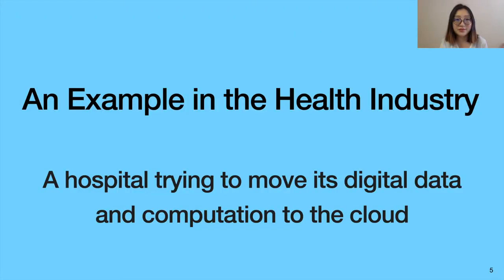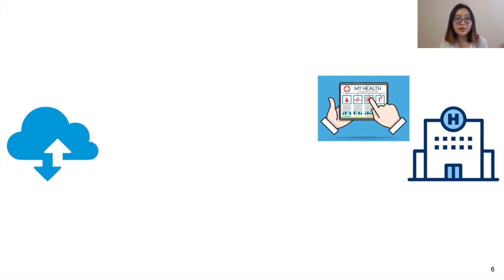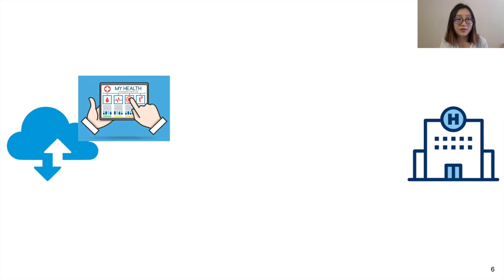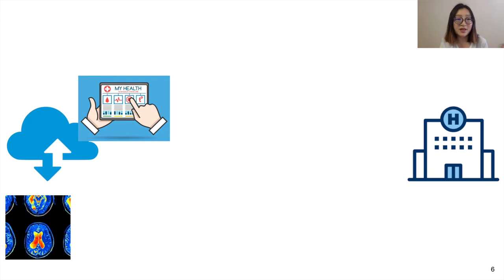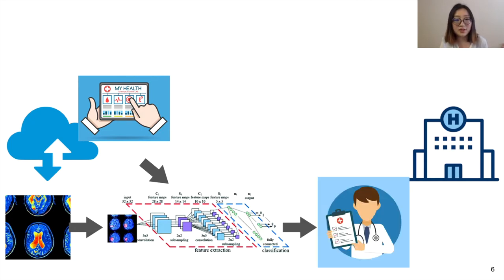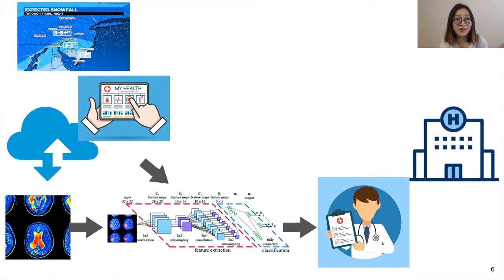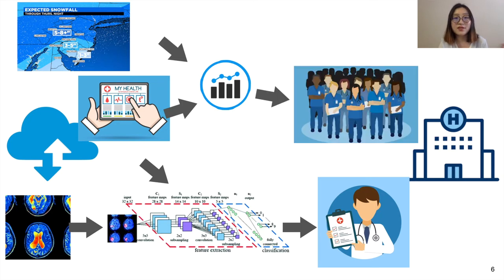But can there be any problems? Let's take a look at an example in the health industry, where a hospital is trying to move its digital data and computation to the cloud. This hospital first wants to migrate its patient medical records to the cloud, store it securely and with privacy, and do the same for medical images as they are generated. Next, the hospital wants to combine these data sources and perform certain machine learning tasks, so that it can help doctors with real-time diagnosis. Finally, it wants to combine medical records with public data like weather forecasts to perform data analytics to come up with a plan for its own staffing.